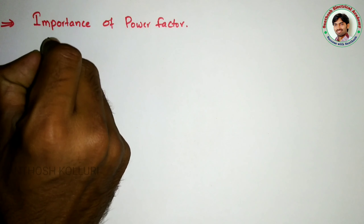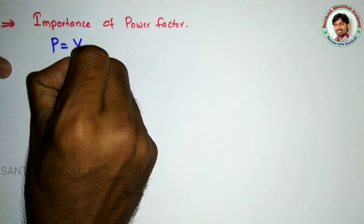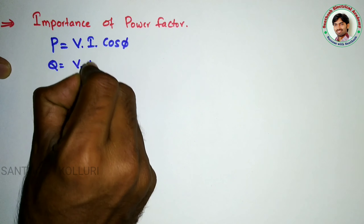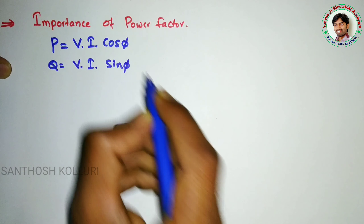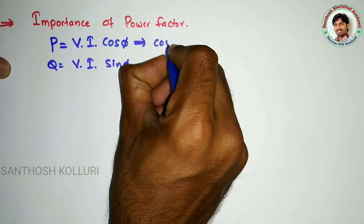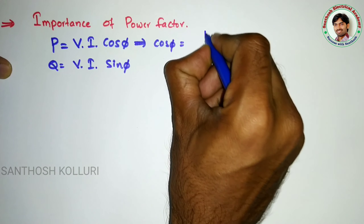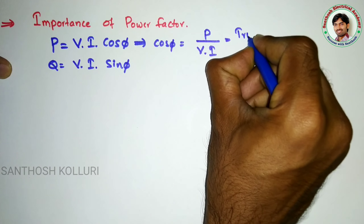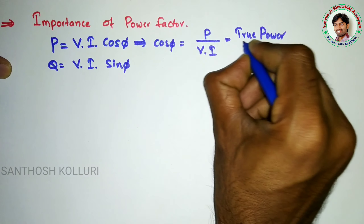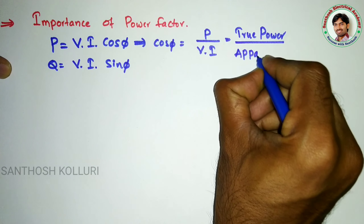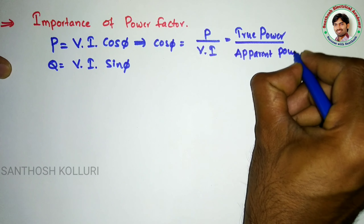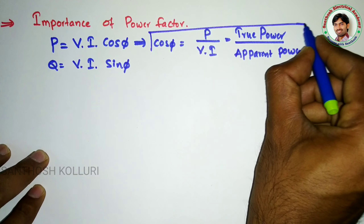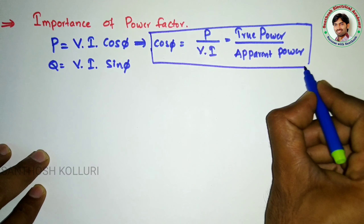If you know, active power P is equal to V times I times cos φ, and reactive power Q is equal to V times I times sin φ. From this, cos φ — which is the power factor — is P divided by V·I. So P can be called true power, and V·I is called apparent power.